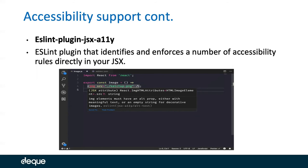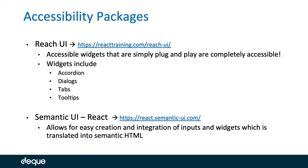Accessibility packages: these are gaining popularity big time. There are two packages that kind of go outside of React but are known commodities: Reach UI and Semantic UI for React. Reach UI is basically accessible widgets that are plug-and-play within your application and completely accessible. Those widgets include accordions, dialogues, tabs, tooltips, modals, and all different kinds. Straight out of the box, if you use those they are accessible. I've been able to test almost all of them and there are very few things I would change in the way they've been implemented. It can help you if you're using widgets within your application to make them accessible.